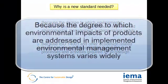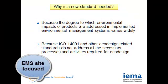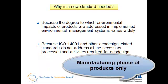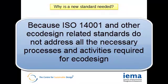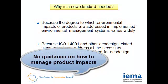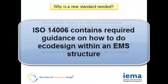So why is a new standard needed? Firstly, because the degree to which environmental impacts of products are addressed and implemented in environmental management systems varies widely. Experience has shown that many EMSs tend to stay site-focused, or organisations only consider product impacts in the manufacturing stage, neglecting a full lifecycle perspective, which is the cornerstone of eco-design. Secondly, because ISO 14001 and other eco-design related standards do not address all the necessary processes and activities required for eco-design. However, ISO 14006 addresses this issue.